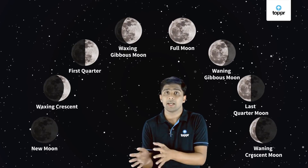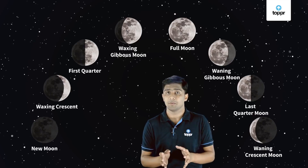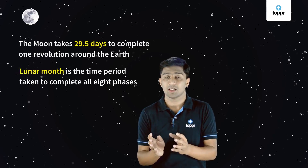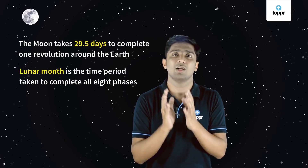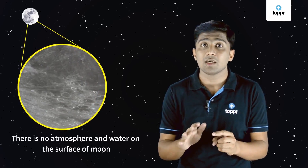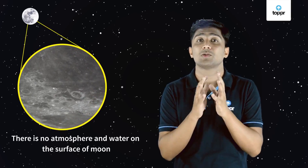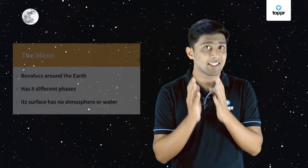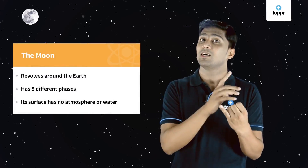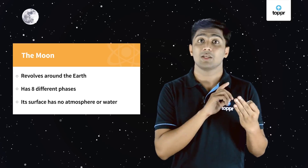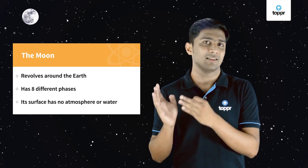Now we know the different phases of moon. There are eight phases of moon. But how much time does the moon take to revolve around the earth? It takes 29 and a half days to complete one revolution, and this is called a lunar month. Speaking about the moon — there is no atmosphere and there is no water on the surface of the moon, and the surface of the moon looks very rough. So in this chapter, we have learnt that the moon revolves around the earth, there are eight different phases of the moon, and there is no atmosphere and no water on the moon.